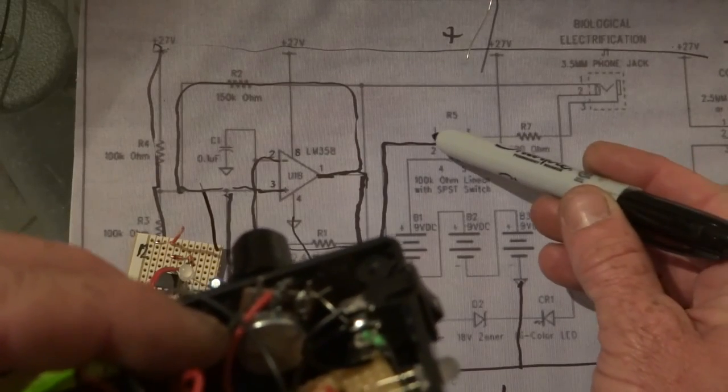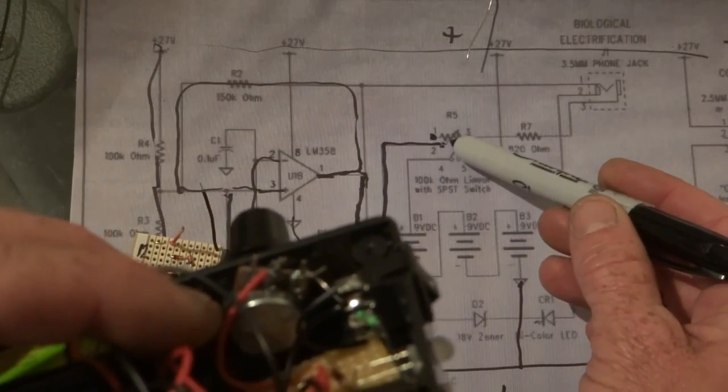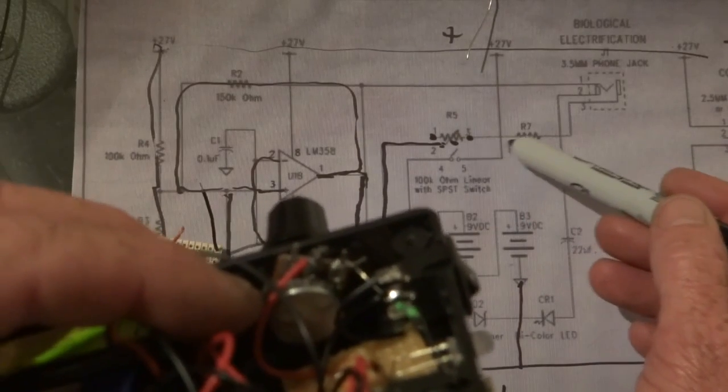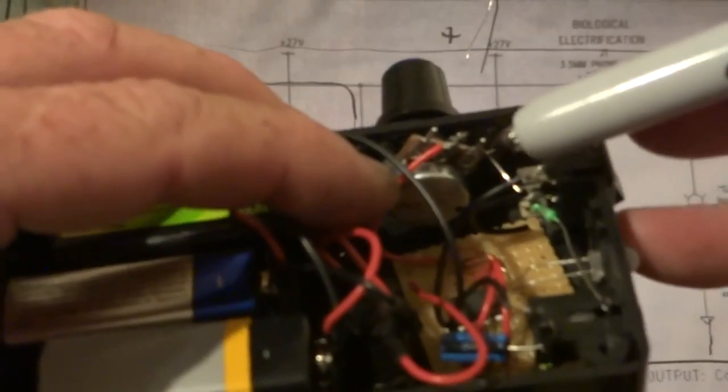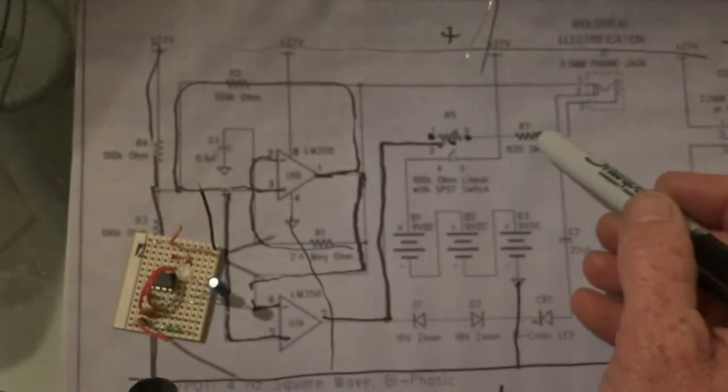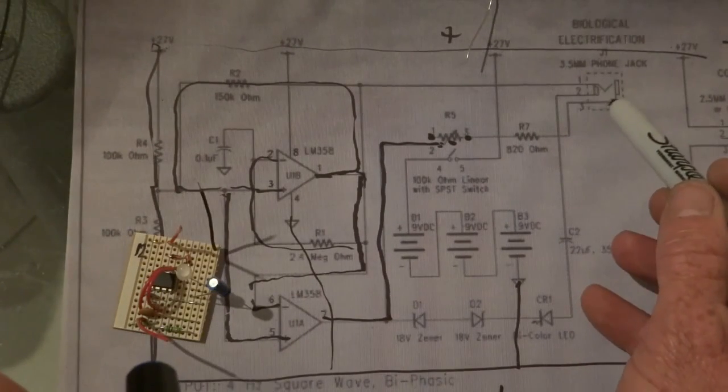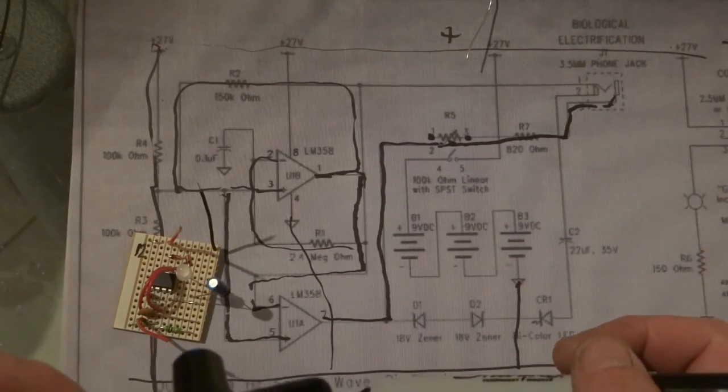And then you have the end pin on the trim pod, or that there goes to the middle. This one here goes to the 820k resistor, which comes from there to the plug, which is basically from there up to the plug. So that's that part done.